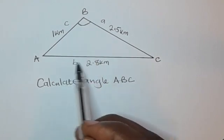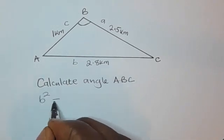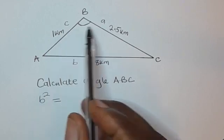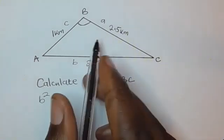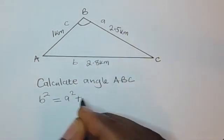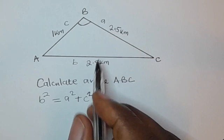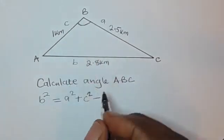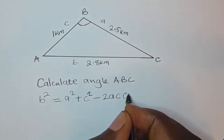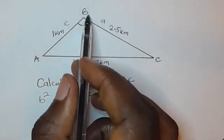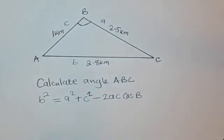To come up with the cosine rule to calculate this angle, first you take the side opposite to the angle, which is b. So we say b squared is equal to a squared plus c squared minus 2ac cos B — where a and c are the two sides forming the angle, and B is the angle we are looking for.